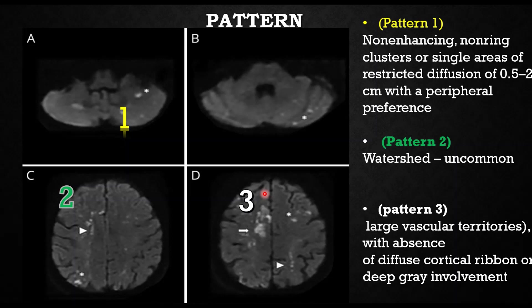There are three important imaging patterns in cancer-associated stroke. Pattern one consists of known enhancing small areas of restricted diffusion with a peripheral preference. Pattern two is a watershed territory infarct. Pattern three involves a fairly large vascular territory infarct with absence of diffuse cortical involvement or deep gray matter involvement.